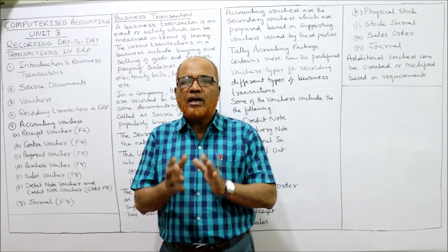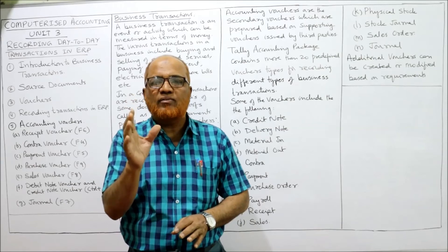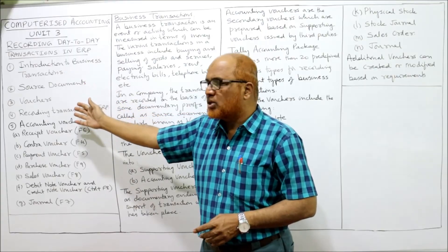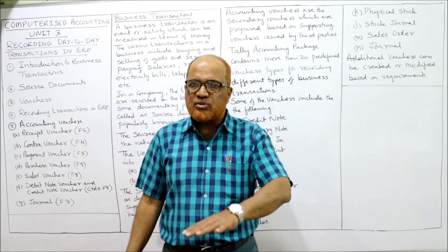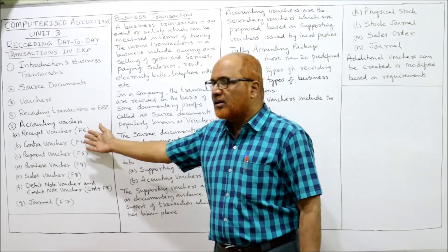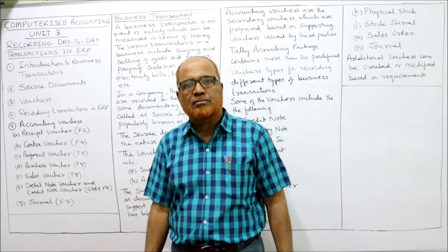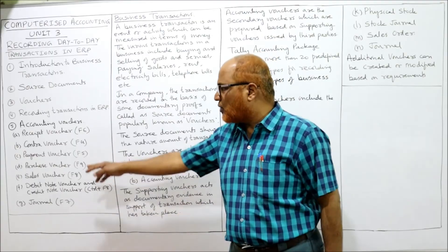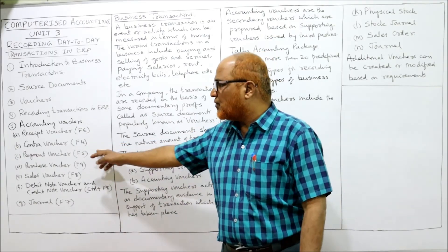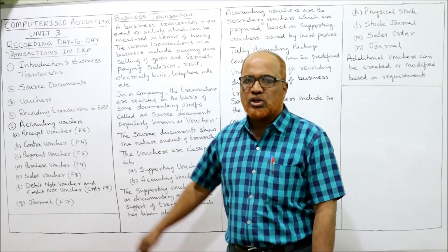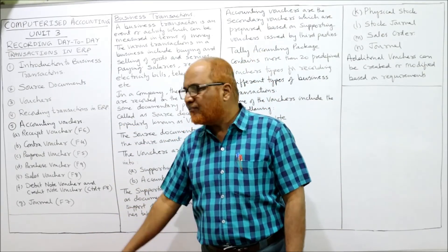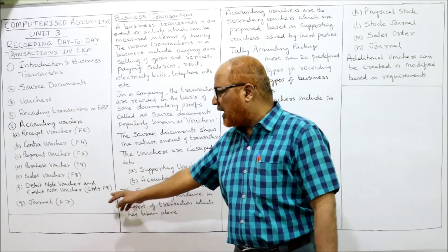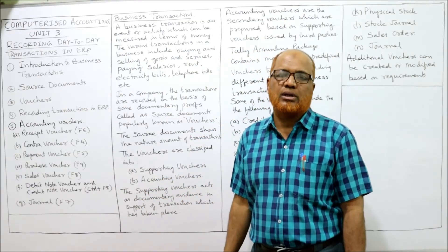In this video I have explained the contents of this unit: business transactions, source documents, vouchers, how to record transactions, and types of vouchers — accounting vouchers and supporting vouchers. The function keys are from F4 to F9: F4 is for contra voucher, F5 is for payment voucher, F6 is for receipts voucher, F7 is for journal, F8 is for sales voucher, F9 is for purchase voucher, and Control+F8 gives debit note and credit note voucher.